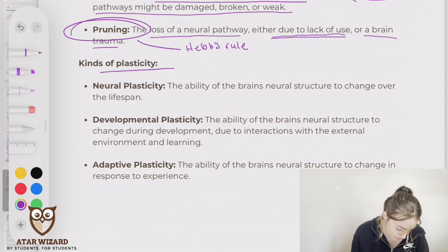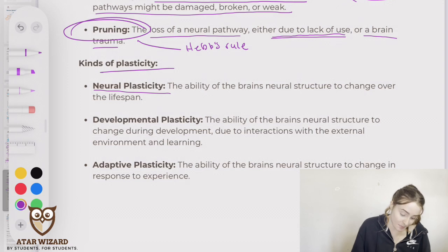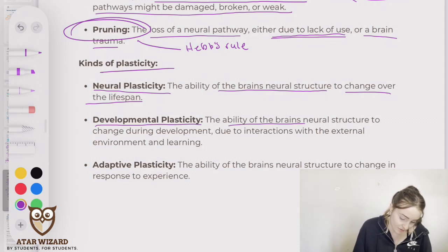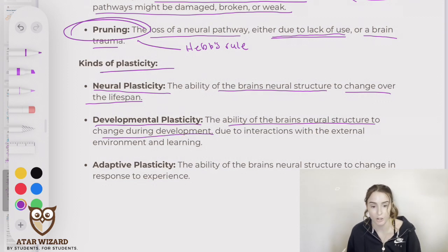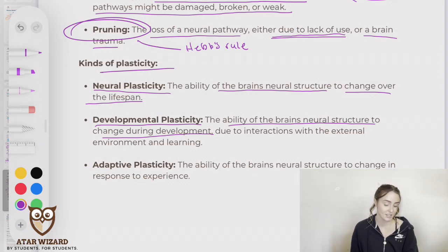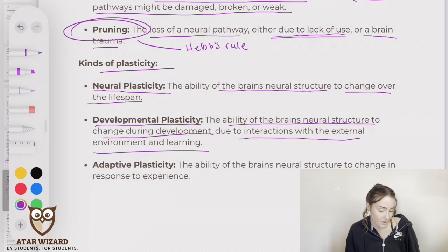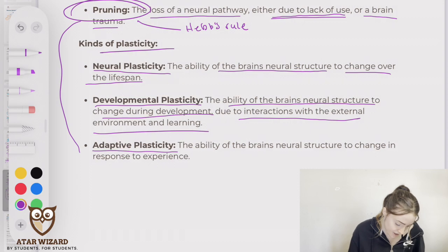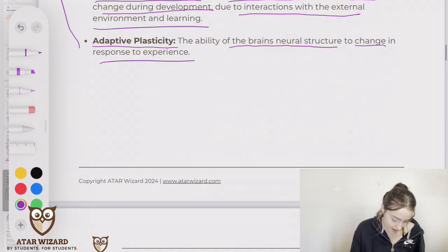The kinds of plasticity we have: neural plasticity, which is the ability of the brain's neural structure to change over the lifespan. Developmental plasticity, which is the ability of the brain's neural structure to change during development — so as we're growing up, as children are undergoing new experiences and learning new things, due to interactions with the external environment. Adaptive plasticity is closely related to pruning, with the ability of the brain's neural structure to change in response to experience.